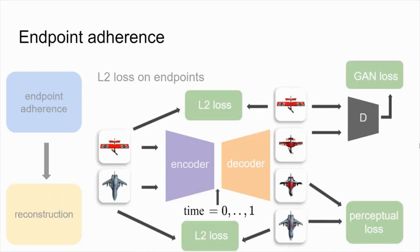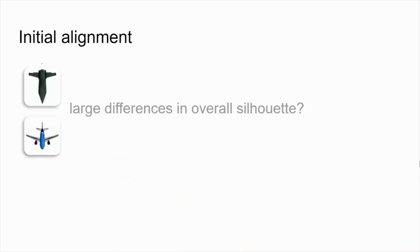The third and final requirement stipulates that sequence endpoints remain faithful to the given inputs. Therefore, a simple reconstruction loss is employed to bootstrap timestamp 0 to the source and timestamp 1 to the target. Having dealt with the three basic characteristics, we often find that the source and target shapes differ substantially in their overall silhouette, which makes it difficult for the generator to figure out a plausible in-between shape.